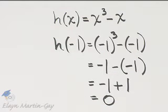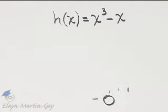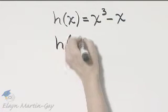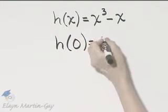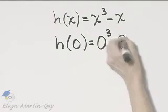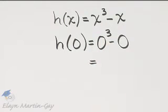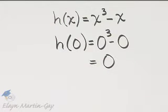Let's find a few more function values. Let's find h of 0. Everywhere there's x, I replace x with 0. That's 0 cubed minus 0. Well, 0 cubed is 0, and 0 minus 0 is 0. So h of 0 is 0.